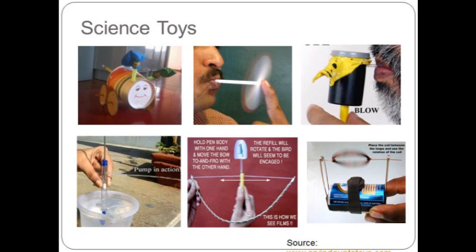Making science-based toy models are the main activities of the group. Working on various science principles, hundreds of such toys have been designed by Professor Arvind Gupta, a scientist turned toy maker in India. They are low cost and can be made from easily available materials. The first toy is a balloon car, which can be made of paper cups, cardboard wheels, balloons, straws, etc. It is a car working on Newton's third law of motion.